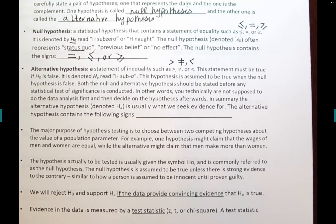If the jury decides there is enough evidence to convict the person, the defendant is declared guilty. If the prosecutor was not able to collect enough evidence beyond reasonable doubt, they acquit the person and declare them not guilty. It works the same way in hypothesis testing.